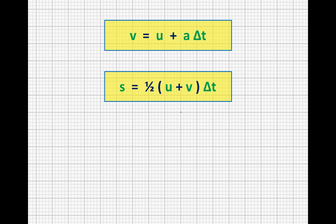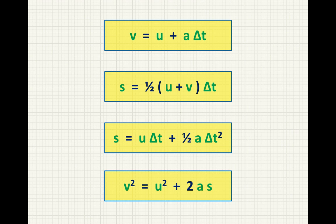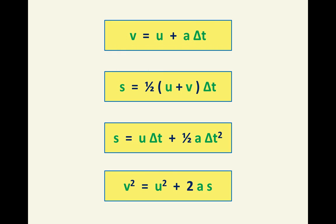So to summarize, these are our equations of motion. v equals u plus at. s equals a half u plus v times t. s equals ut plus a half at squared. And v squared equals u squared plus 2as. Just to work our way through them, this one is really just the definition of acceleration rearranged.